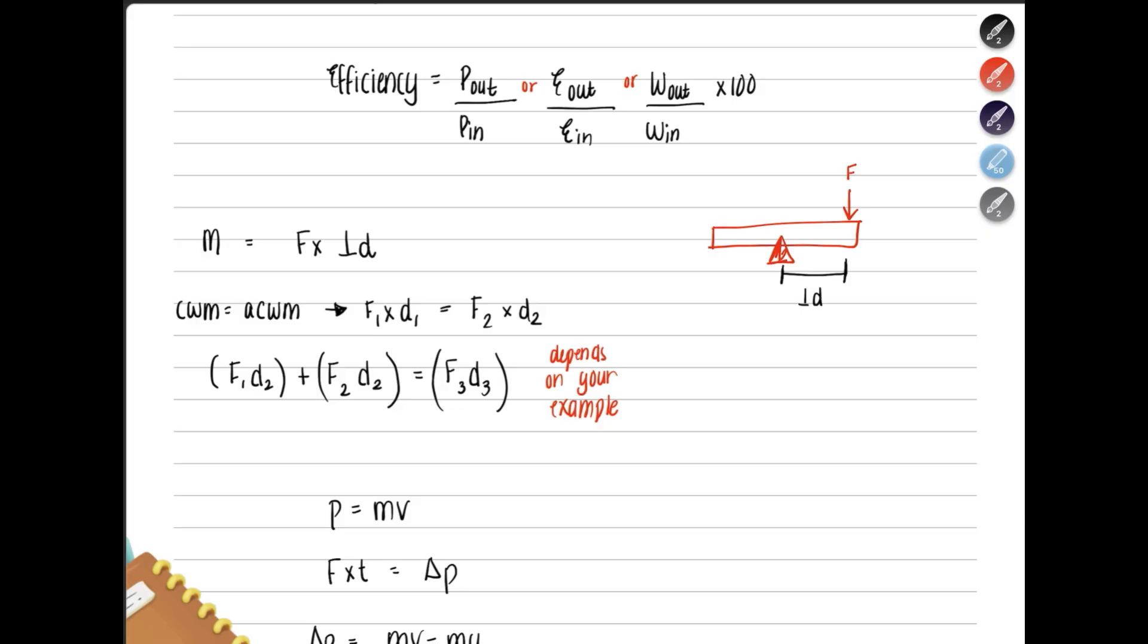Remember that the object is in equilibrium when there is no resultant force or no resultant moment. So at that time, if there is no resultant moment, clockwise moment equals anticlockwise moment. Any force that is causing the object to move clockwise is the clockwise moment. And any force that is causing the object to move anticlockwise is called the anticlockwise moment. This is the clockwise moment. This is the anticlockwise moment.